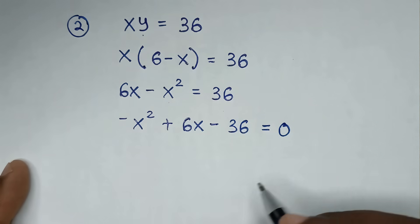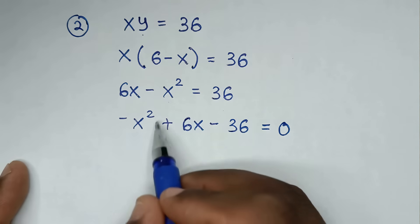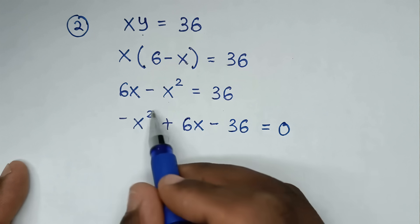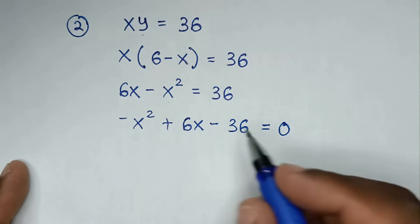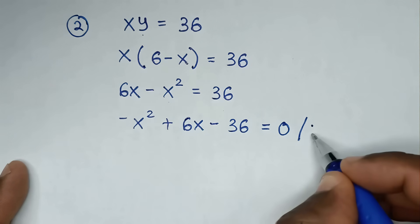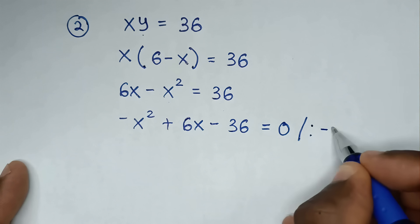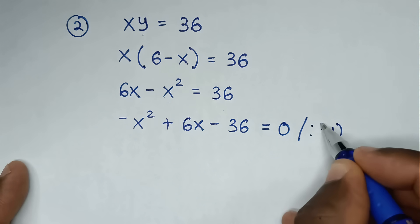Now in the next step, we have negative x squared. To make it positive, we will divide the whole equation by negative 1.